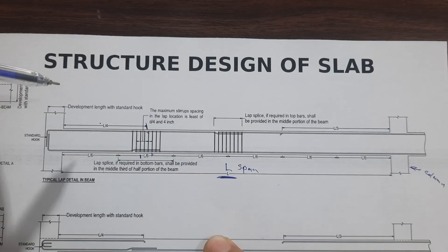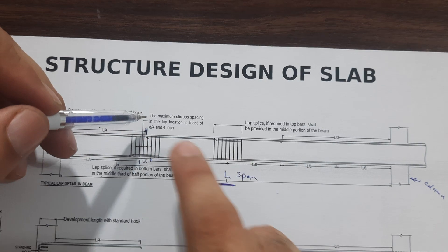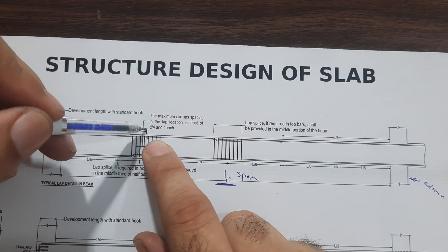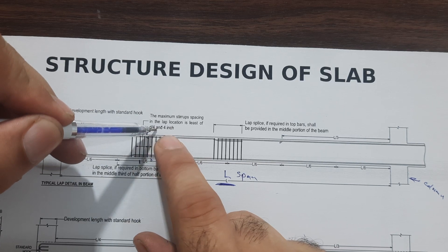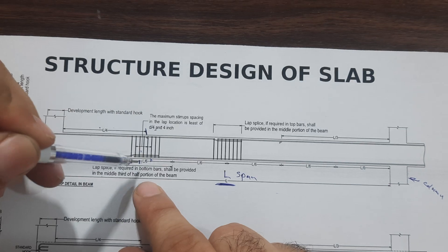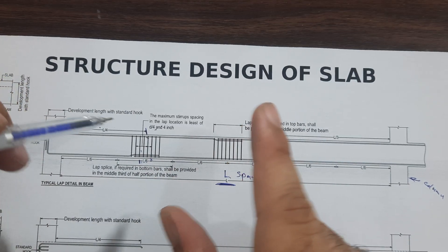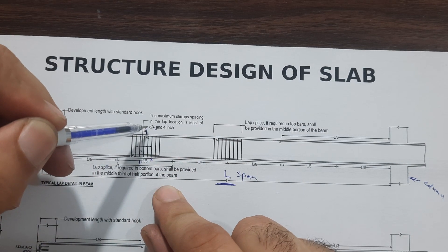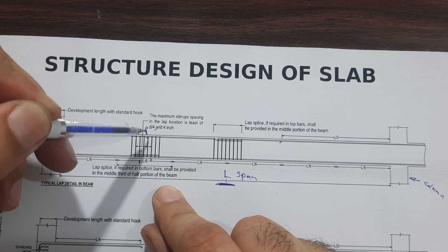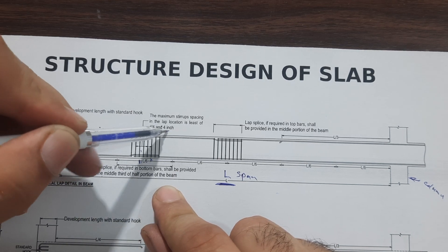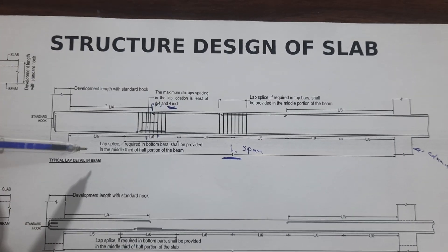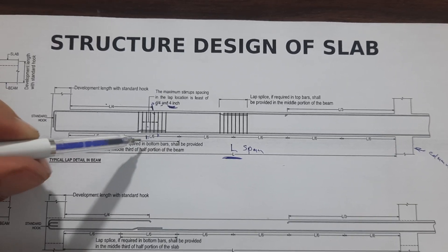At the distance of L/6, you are able to provide the lapping length. The maximum stirrup spacing in the lap location shall be at least D/4, or you can say 4 inches. At the distance of the lapping length, remember that stirrups should be provided closely — up to D/4, or total depth of the beam divided by 4, or up to 4 inches — at the distance of L/4.